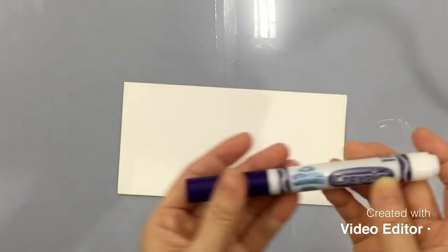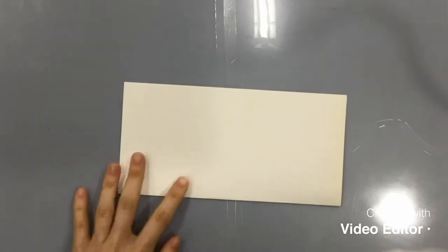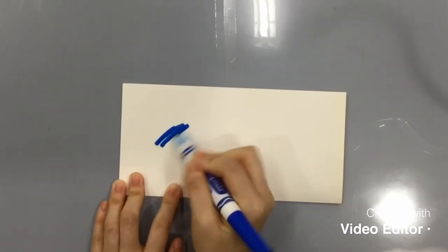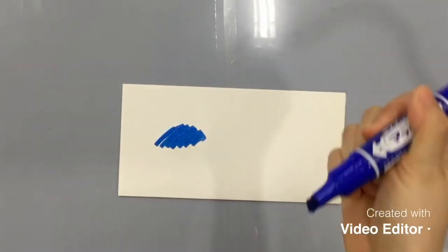We start with water-based markers. For some marker brands, it's written that it's washable. What I'm going to do is take one of those washable markers and make a little scribble on the paper. I'm going to do the same, but this time with an oil-based marker.